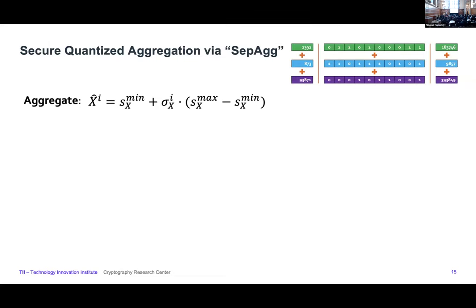The quantization scheme we consider works as follows. Given a vector of values, we use a Bernoulli distribution to find two values: the maximum and minimum. Using those, we convert all values to either 0 or 1 — 0 represents the minimum value and 1 represents the maximum. So a vector of 100 elements becomes two scalar values, a minimum and maximum, plus a bitstream of 100 bits. You can recover the original value as S_min plus delta times (S_max minus S_min), where delta is the bit: if delta is 0 you get S_min, and if delta is 1 you get S_max.